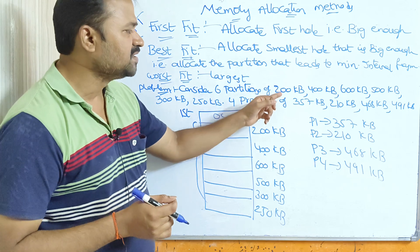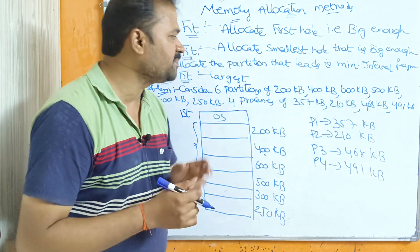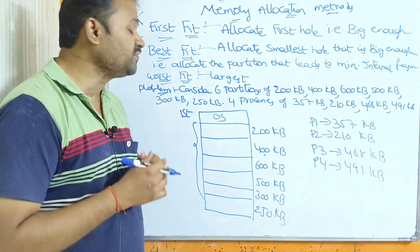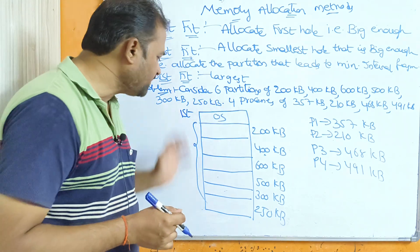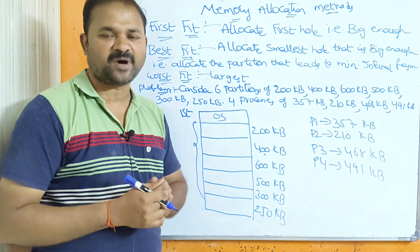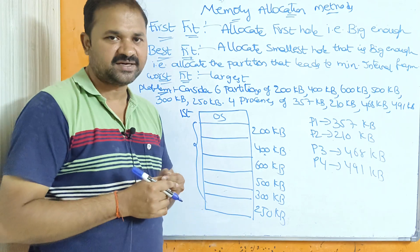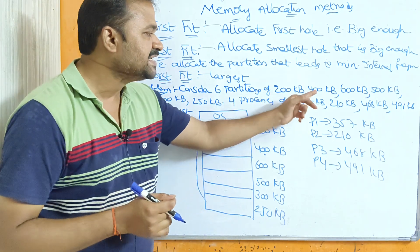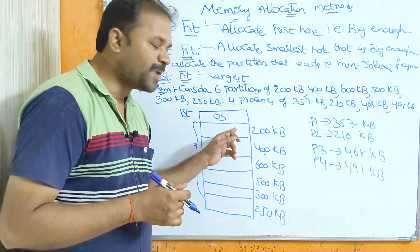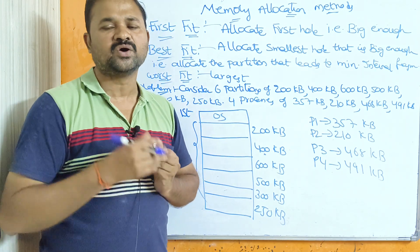Consider six partitions of sizes 200 KB, 400 KB, 600 KB, 500 KB, 300 KB, and 250 KB. The main memory is divided into two parts — the first part contains the operating system, and the user process area is divided into these six partitions. We can call these partitions, fragments, or holes — everything is the same.